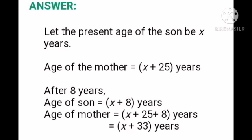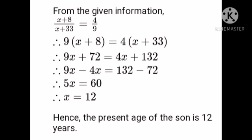After 8 years, age of son is equal to x plus 8 years. Age of mother is equal to x plus 25 plus 8 years, so x plus 25 plus 8 becomes x plus 33 years. From the given condition, x plus 8 upon x plus 33 is equal to 4 upon 9.